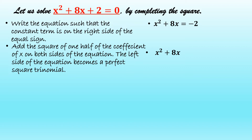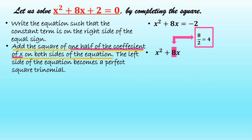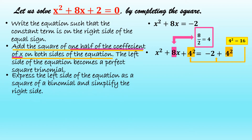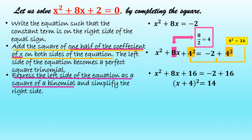We get one half of the coefficient of x, which is 8, so one half of 8 is equal to 4. And add the square of one half of the coefficient on both sides of the equation. Our new equation would be x squared plus 8x plus 4 squared is equal to negative 2 plus 4 squared. The left side of the equation becomes a perfect square trinomial. Express the left side of the equation as a square of a binomial and simplify the right side. So we have quantity x plus 4 squared is equal to 14.